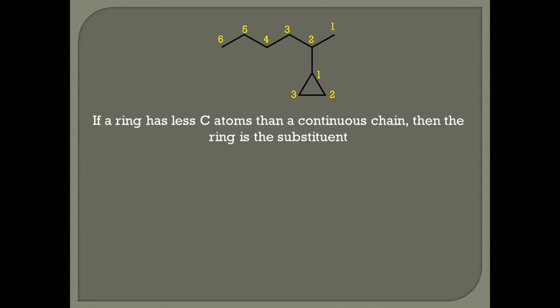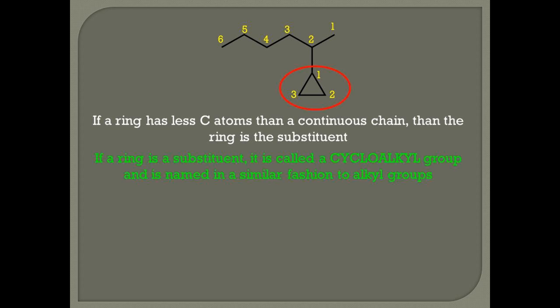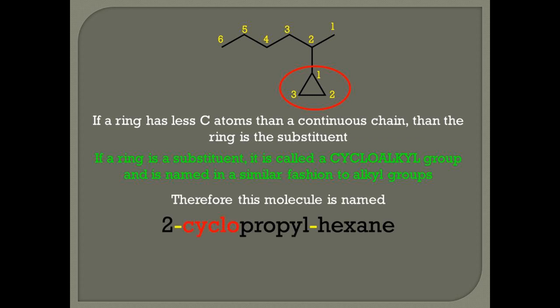Rule 4. If a ring has fewer carbon atoms than a continuous chain it's attached to, then the ring is the substituent, whereas the continuous chain is the main chain. If a ring is a substituent, it is called a cycloalkyl group, and therefore it's named in a fashion similar to alkyl groups. This substituent is cyclopropyl because it has three carbons in a ring. If it were four carbons it would be cyclobutyl, five carbons cyclopentyl, and so on. Therefore, this molecule is called 2-cyclopropylhexane.